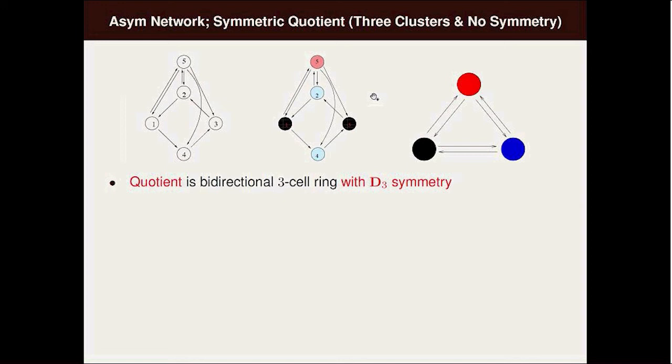Black nodes receive a blue and a red input, and red receives a black and a blue input. That means it's balanced. You have a flow invariant subspace even though there's no symmetry, and you get a quotient network where the nodes in the quotient network are the colors in the original network and the arrows are the projection. We just get this bidirectional ring of three nodes that we were talking about before.